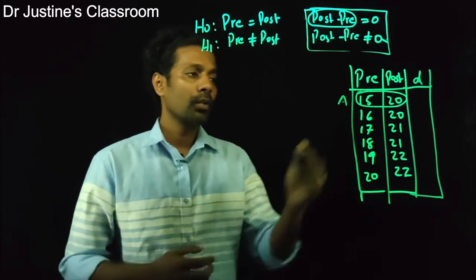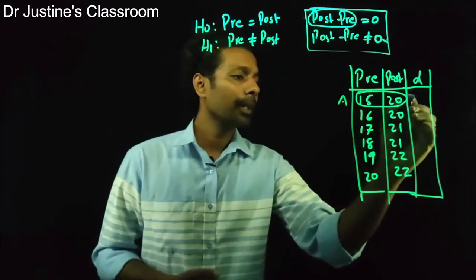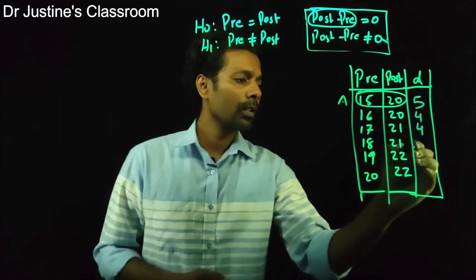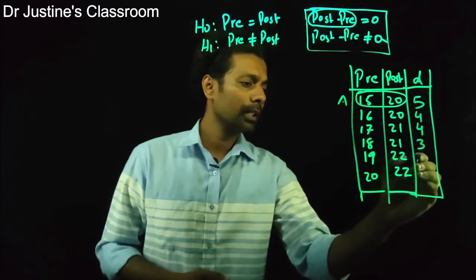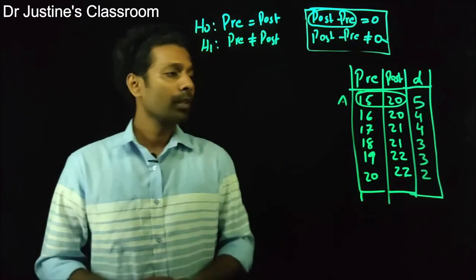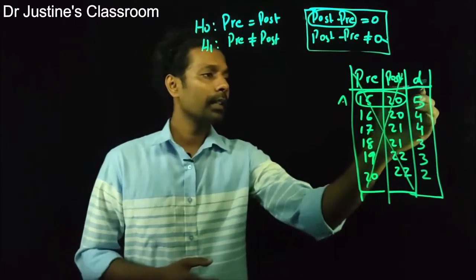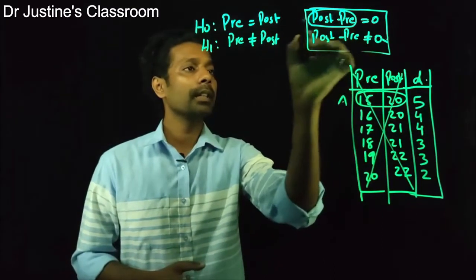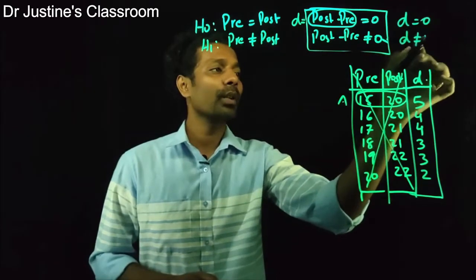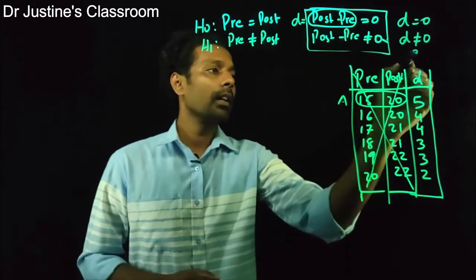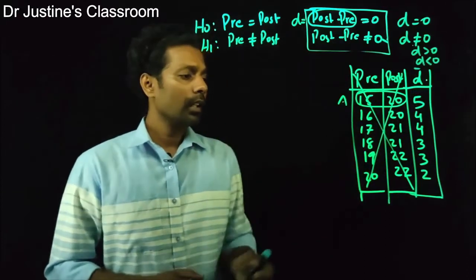Each paired data will be treated as a pair itself. What we do is find a D value — the difference value — that is, how much the scores changed after the intervention. I'm taking post-test minus pre-test. You can also take pre-test minus post-test; either works. So post-test minus pre-test gives us: 5, 4, 4, 3, 3, 2. These are the D values. I'm not going to use the original scores anymore; I'm only going to use this D value. The hypothesis becomes D equals 0 or D is not equal to 0. Then I calculate the mean of D and work with that.